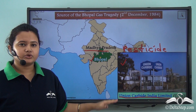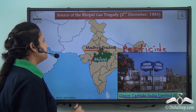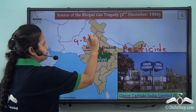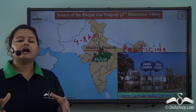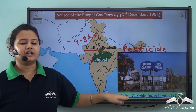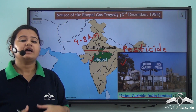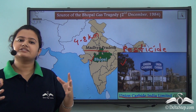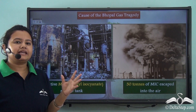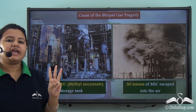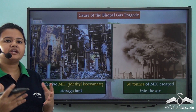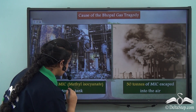This plant was located at the outskirts of Bhopal, about 4.8 km away from the main city. An accident that took place on 2nd December in this plant led to a massive catastrophe. Let's see how the disaster occurred. The chemical pesticide plant housed 3 MIC storage tanks. MIC is an abbreviated form of methyl isocyanide.